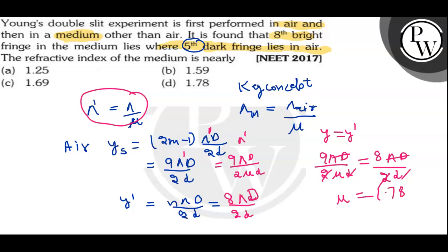Okay, mu is equal to 1.78, which suggests that refractive index of the medium is nearly 1.78. That is option D is the correct answer. Okay, I hope you got the concept. All the best.